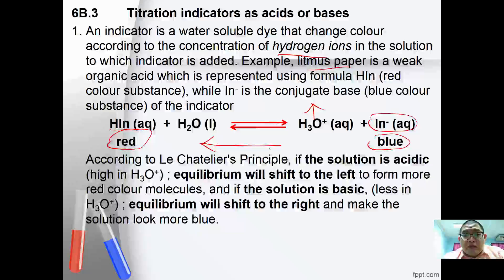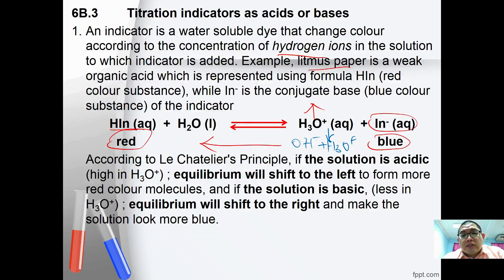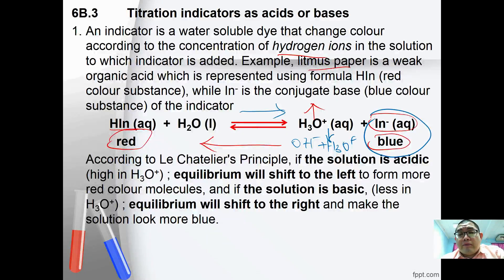Conversely, in a basic solution, OH⁻ reacts with H₃O⁺ to form water, decreasing [H₃O⁺]. This shifts equilibrium to the right, which is why litmus paper appears blue in alkaline solution.